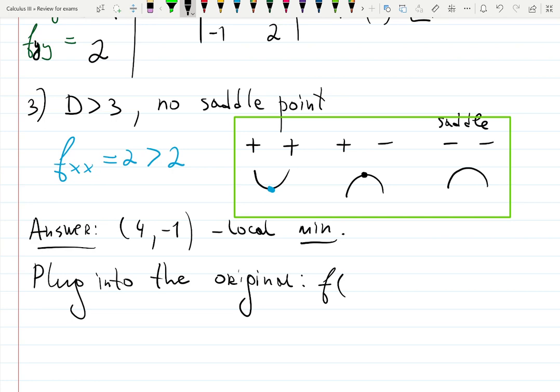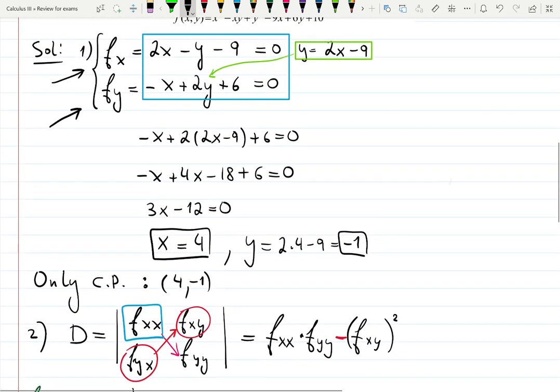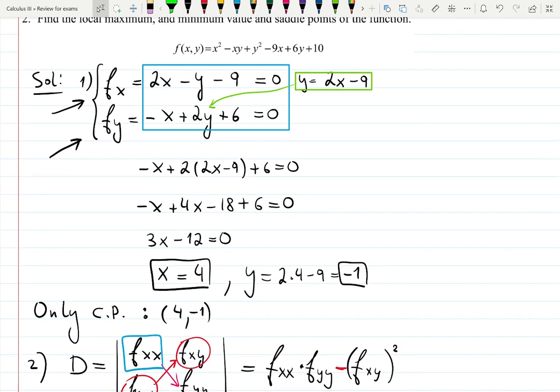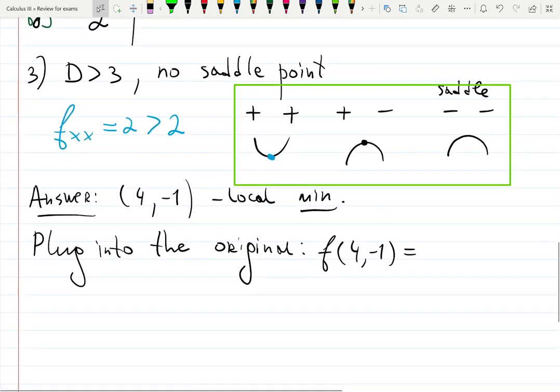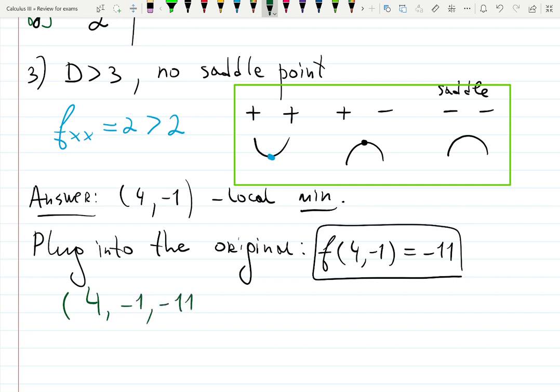So f at (4, -1) will be, I'm going back to the very original function. Here it is. x squared minus xy plus y squared minus 9x plus 6y plus 10. That will give me minus 11. So that is the height of that local minimum. So the point is (4, -1, -11). Local minimum point.